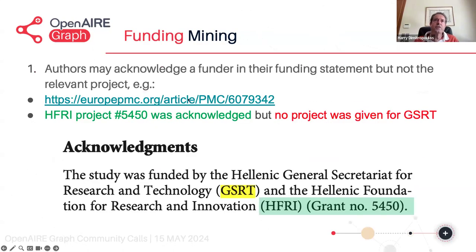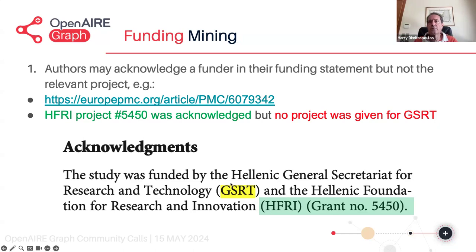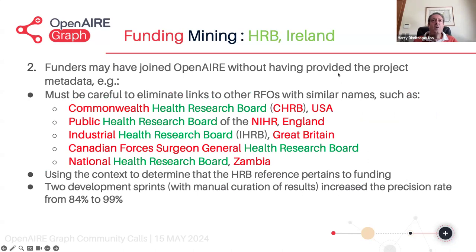Let me give two examples. For the first case, here's a publication acknowledging two Greek funders. For the Hellenic General Secretary of Research and Technology, they just mentioned GSRT but there is no project number. Whereas for the Hellenic Foundation for Research and Innovation (HFRI) there is the grant number. So this we will link only to the unidentified project — you will see it as a link to the funder but no more details. For the case where we don't have the full projects and only have the funder name to mine, things are more difficult.